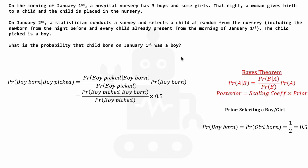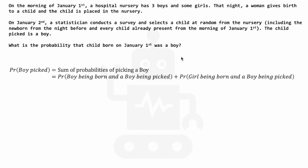Let's focus on the denominator — the probability of a boy being picked. This is just the sum of probabilities of picking a boy. One way a boy can be picked: a boy is born, and then a boy is picked the next day. Or a girl is born, and then a boy is picked the next day. Both are events where a boy is picked on the next day, regardless of who was born. So it will be the sum of these two probabilities — the probability of a boy born intersected with a boy picked next day, and similarly for a girl born intersected with a boy picked next day.